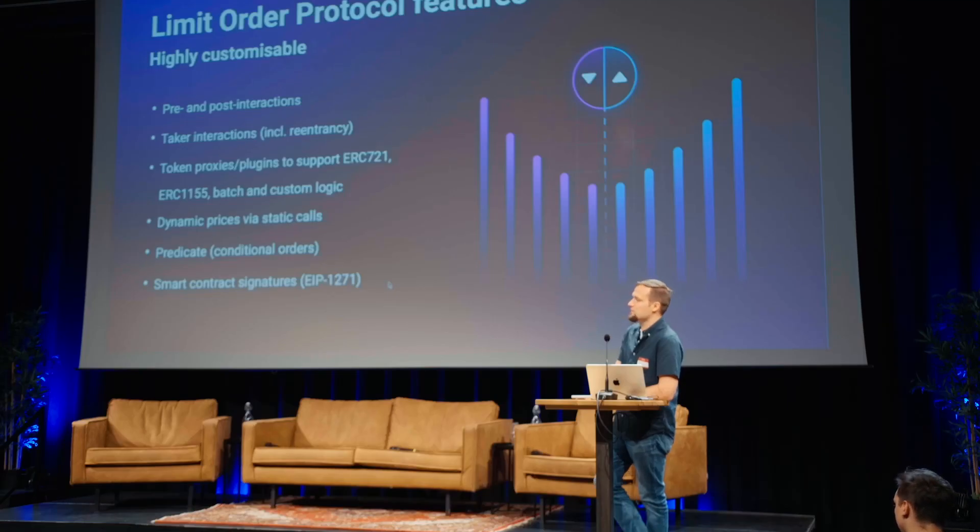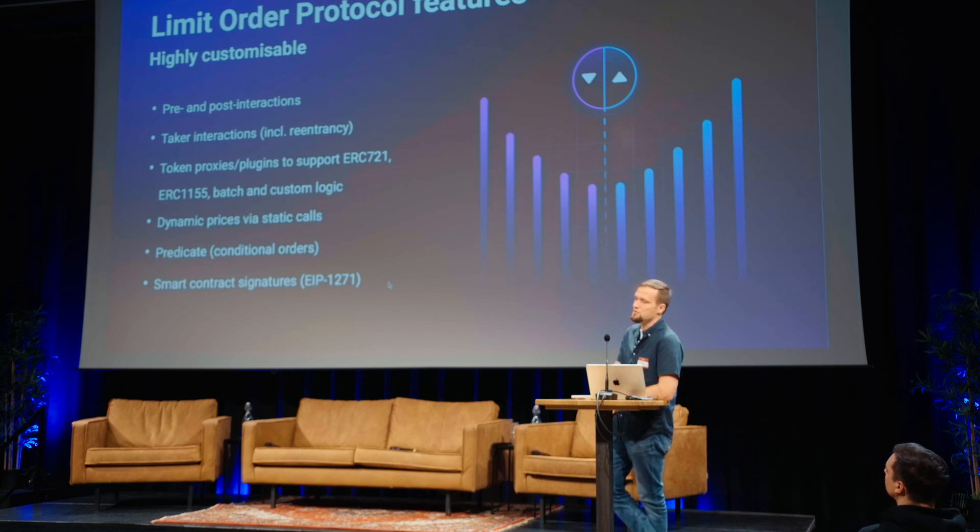We also support smart contract signatures. You can have a smart contract and still be a maker in the limit order protocol. You won't have a real private-key digital signature — instead, the limit order protocol makes a call to `isValidSignature` on your maker address, and if it returns a special magic value, the signature is considered valid. Smart contracts are themselves responsible for checking whether their signature is correct or not.